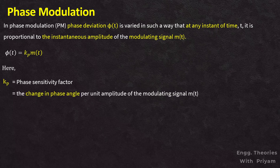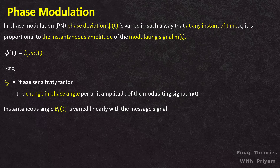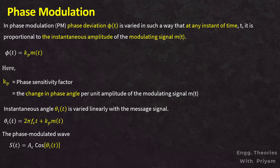The phase sensitivity factor kp represents the change in phase angle per unit amplitude of the modulating signal m(t) and has units of radians per volt. The instantaneous angle θi(t) is varied linearly with the message signal m(t), so θi(t) = 2πfc·t + kp·m(t). Therefore, the phase modulated signal is s(t) = Ac·cos(2πfc·t + kp·m(t)).